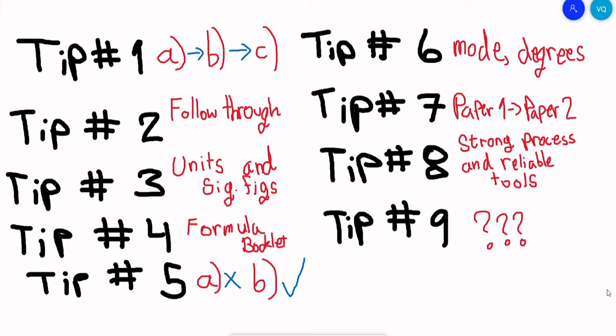Tip number two is that you need to follow through with everything that you've done. If perhaps you know that your answer is incorrect because you have a negative value and it doesn't make sense, or vice versa, follow through anyway. The IB grades half of it for having it correct and the other half is for having a really good process.